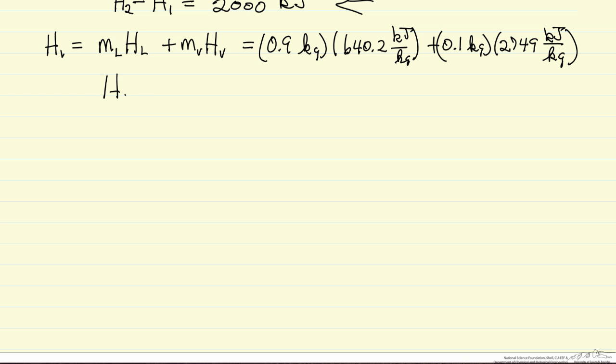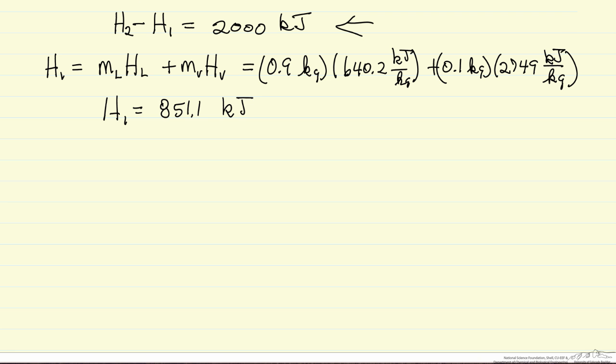So H1 is 851.1 kilojoules, and this is for one kilogram. So notice when I wrote the numbers down I put the units in, very good practice to have the units in always when solving problems. You see the units cancel, and so then our energy balance says that H2 is H1 plus Q, so 2851.1 kilojoules is our final enthalpy.